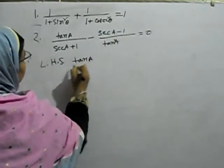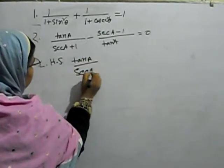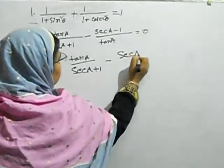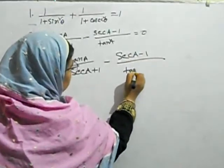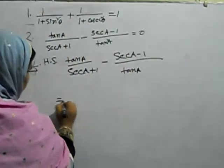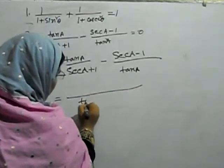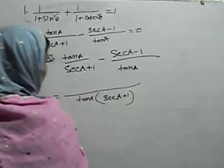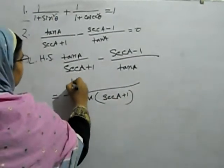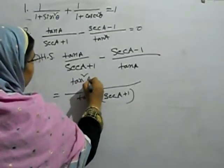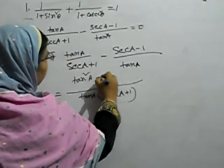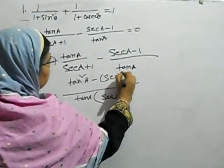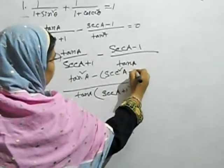tan A by sec k plus 1, minus sec k, minus 1 by tan A. tan A into sec k plus 1, tan A. La sec k minus sec k squared A minus 1.